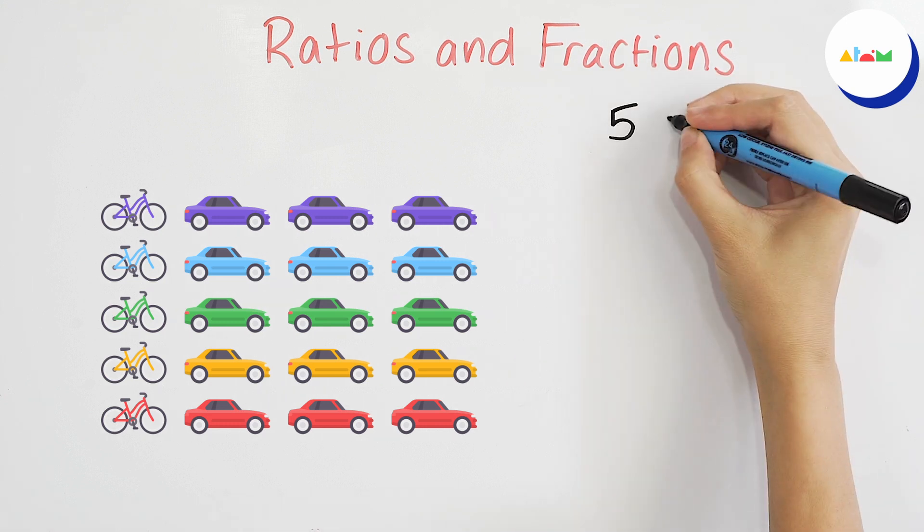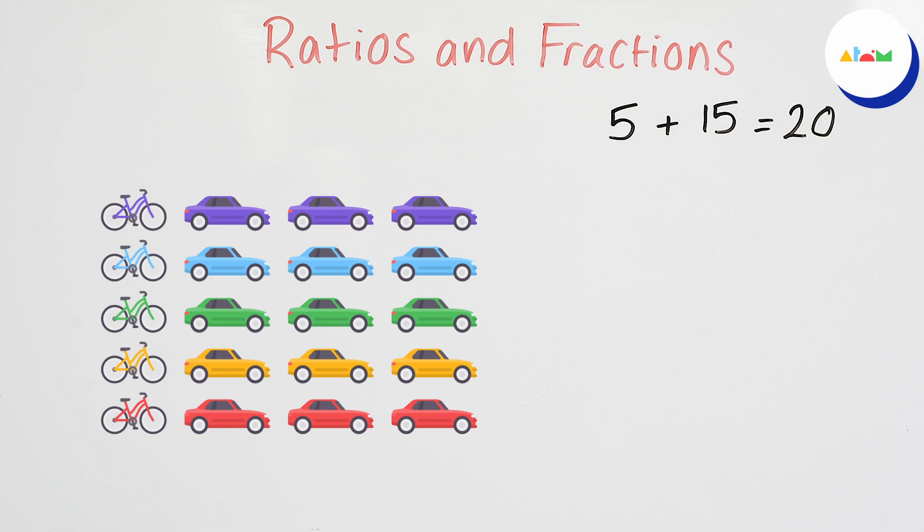In total we have five plus 15 equals 20 vehicles in the car park. Of those 20 vehicles we know that five are bikes, therefore the fraction of bikes in the car park is five over 20.